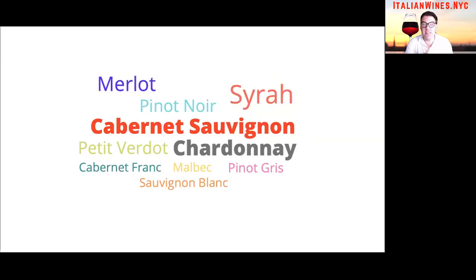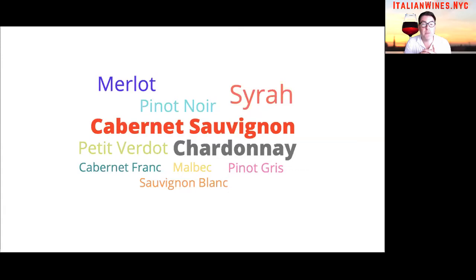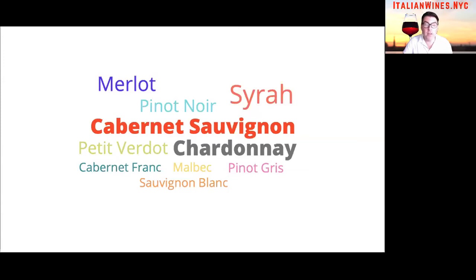I'd like to begin this lesson with a trick question: is Cabernet Sauvignon a grape or a wine? Most of the time I get 50% of people saying it's a grape and the other 50% saying it's a wine. The answer is both. Cabernet Sauvignon is the name of the red grape varietal that turns into Cabernet Sauvignon wine — that's where the name comes from.